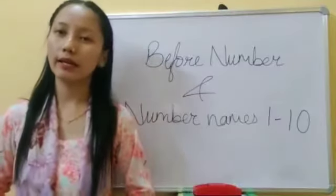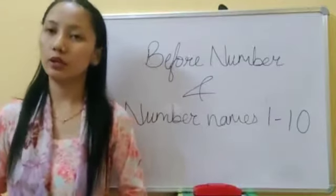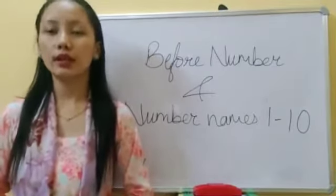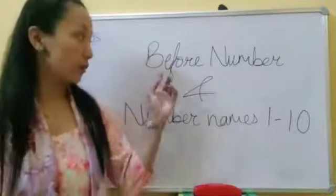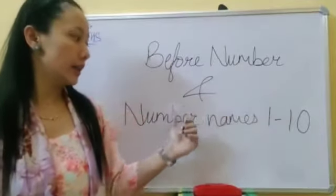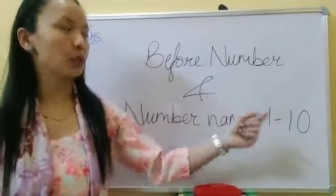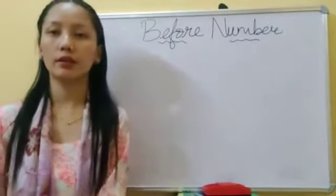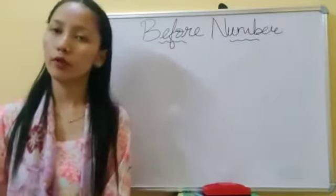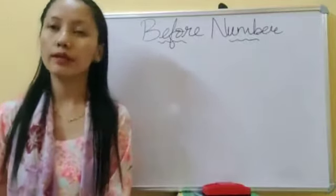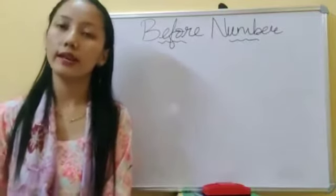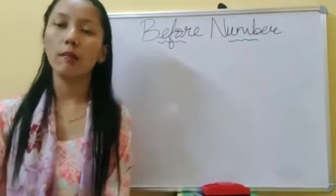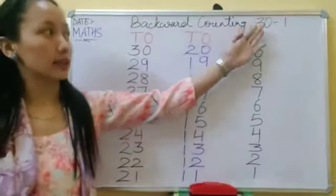Hello kids, welcome back again students. In our last video we have done 'after number'. Today in this video we will learn 'before number' and number names from 1 to 10. Before number means one smaller than the given number. But before that, let's recall backward counting from 30 to 1.